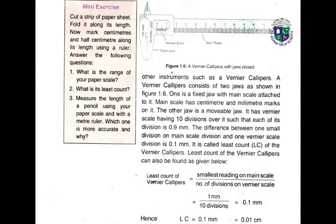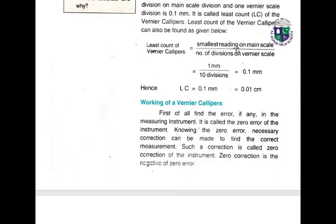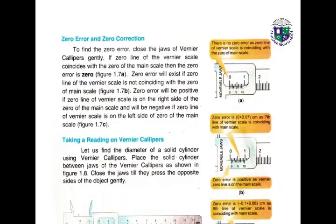The least count of the vernier caliper can be found using the formula: Least count = smallest reading on main scale ÷ number of divisions on vernier scale = 1 mm ÷ 10 = 0.1 mm, or 0.01 cm. To use the vernier caliper, first find any zero error in the instrument — this is called the zero error. Knowing the zero error, the necessary correction can be made to find the correct measurement.